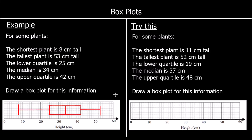There's one for you to try. Give it a go. We've been given the information: the shortest, the tallest, the lower quartile, the median, and the upper quartile. These are the five things we need to draw a box plot, and for each piece of information we're going to draw a line.